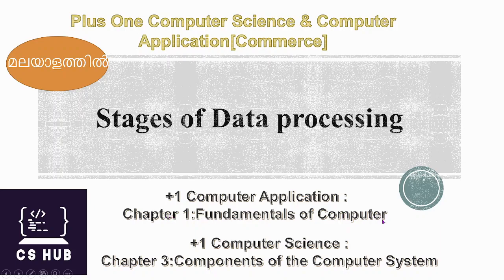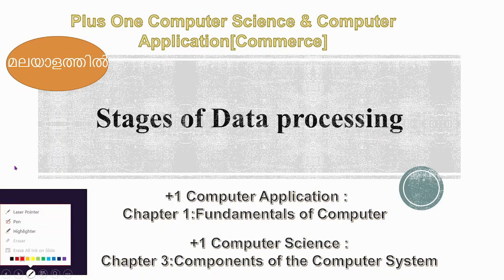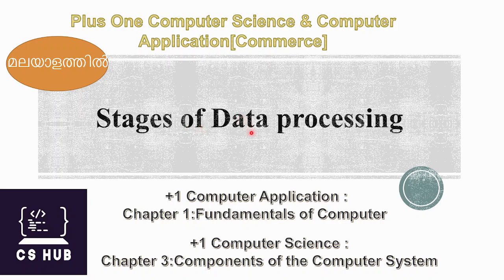That chapter is going to start. At the same time, we are going to talk about computer science chapter 3, component science. In these two chapters, one topic is the first topic: stages of data processing. This topic is also the first topic in chapter 3, components of the computer system.